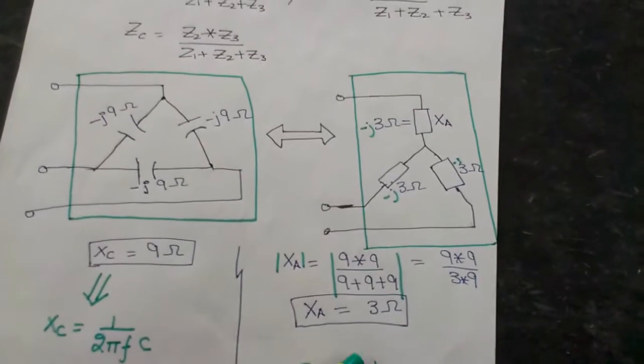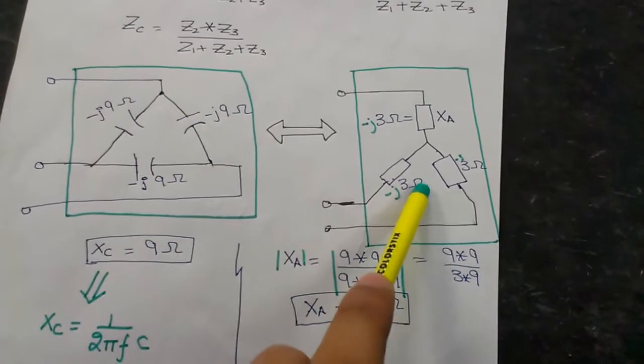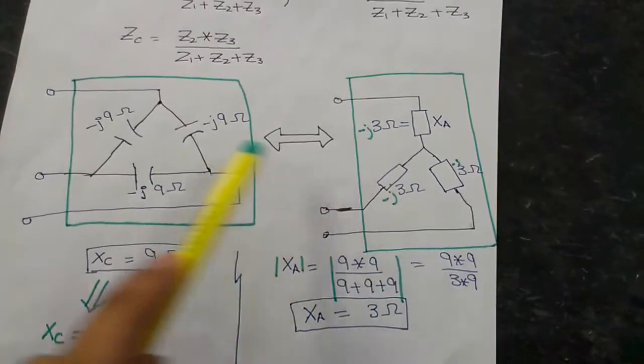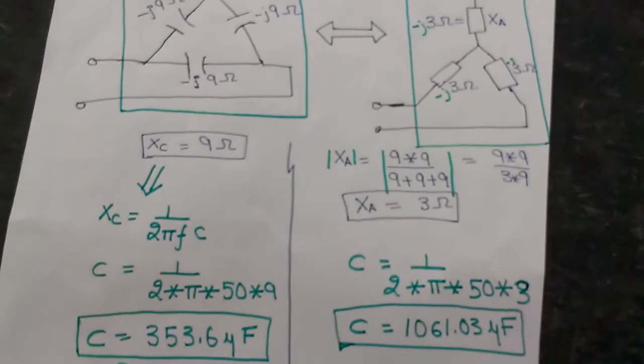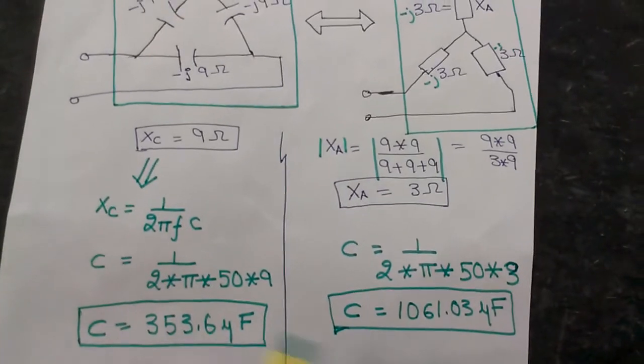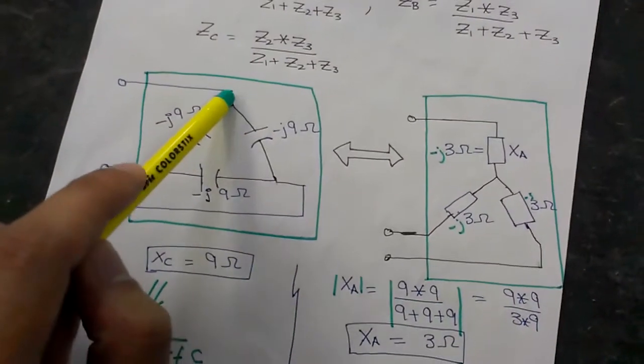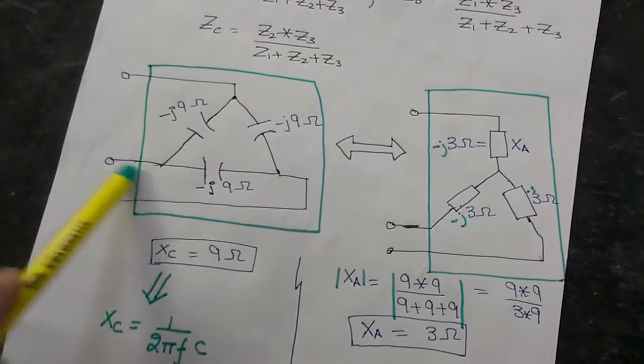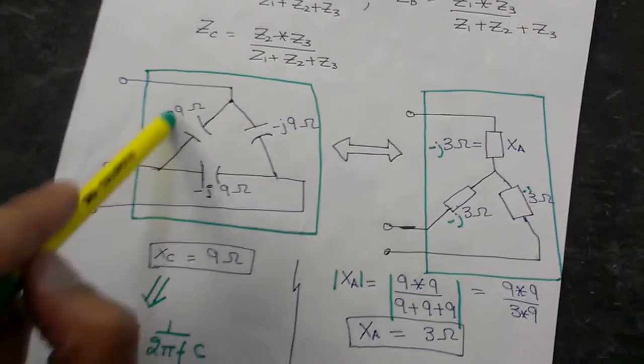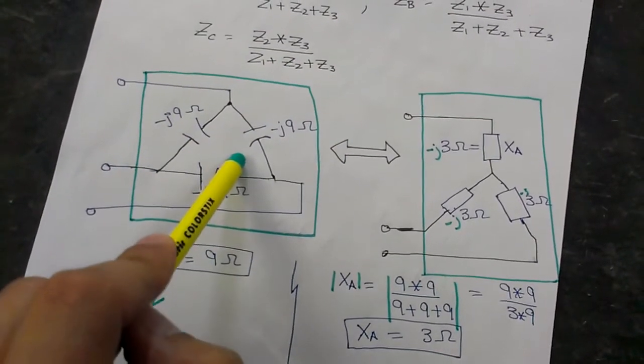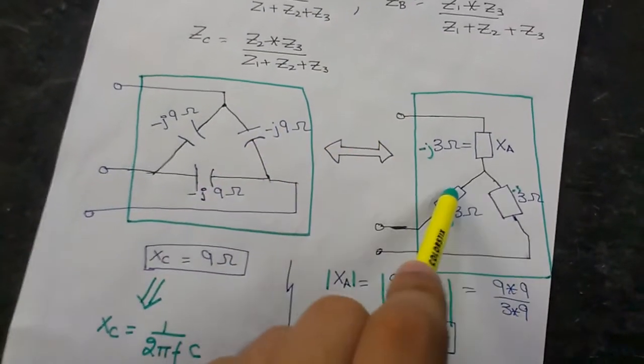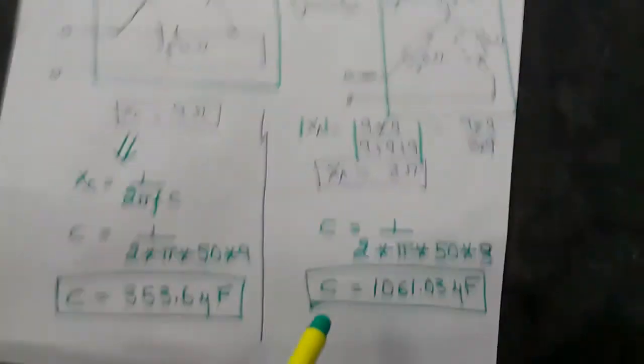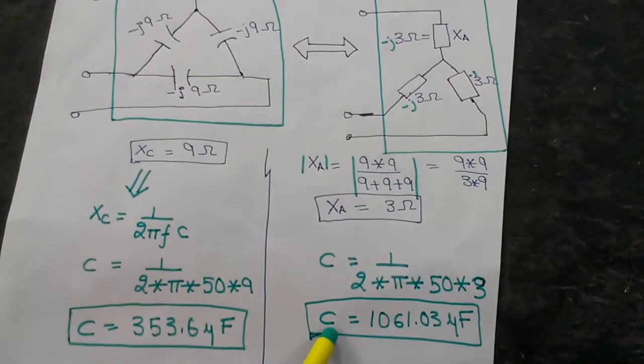So now let's see, these two configurations are exactly equal. That is, if you connect the three capacitors of value 353.6 microfarad in Delta configuration and you take the three terminals out and put the whole configuration in a black box, it will provide you the same reactive power.